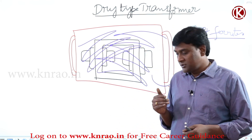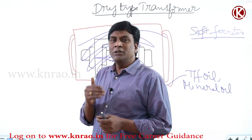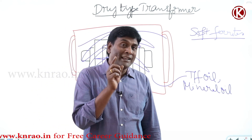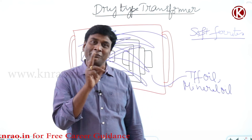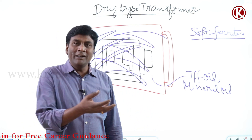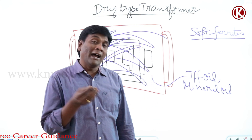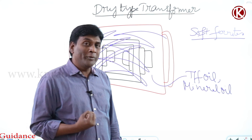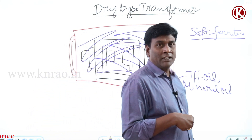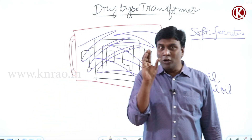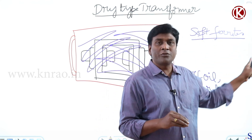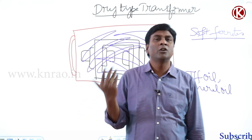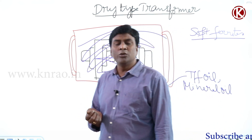When do we use soft magnetic material? For audio frequency transformers, which handle information rather than power, the volume of core material required is less. Under those conditions, since the volume is small, we can use soft ferrites. So for very high frequency transformers like audio frequency transformers, we use soft ferrites.